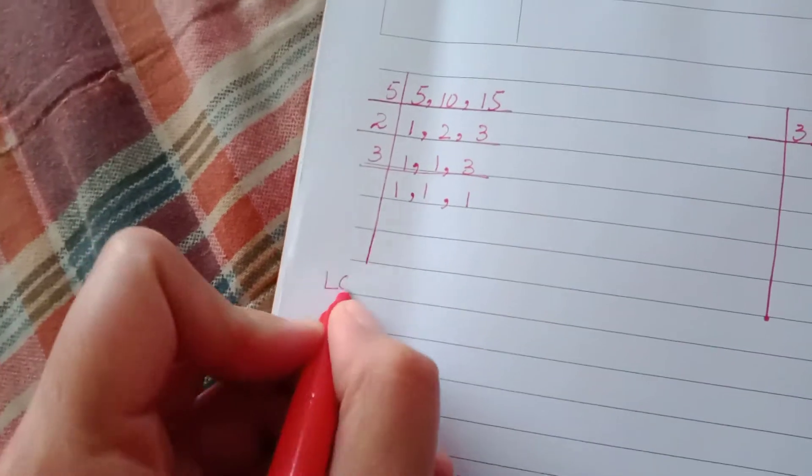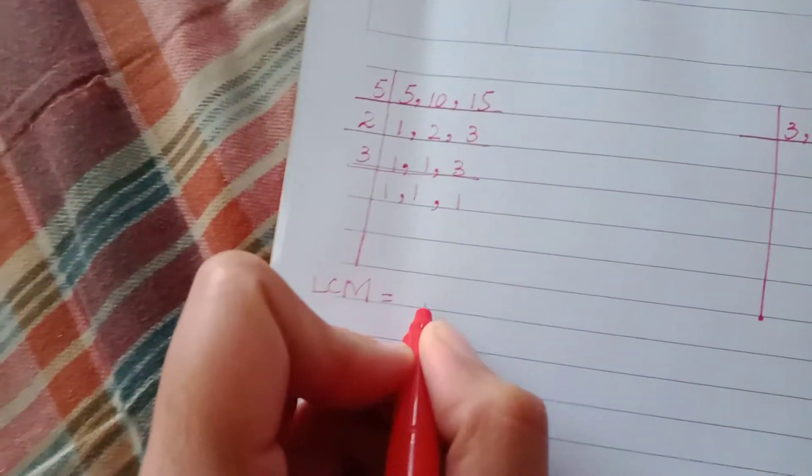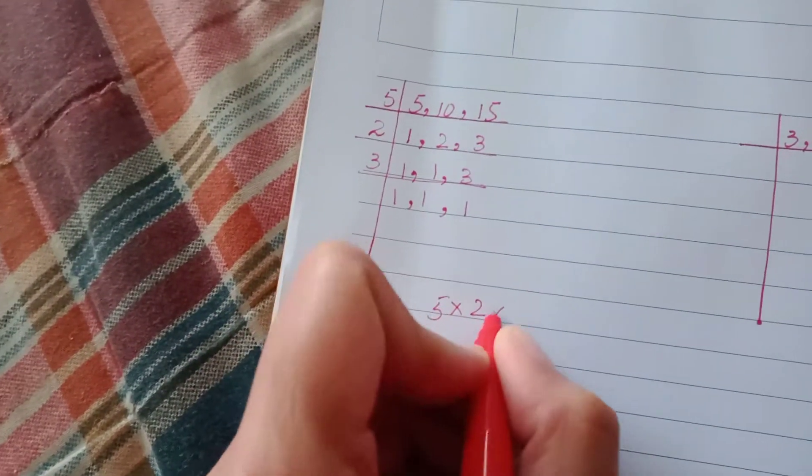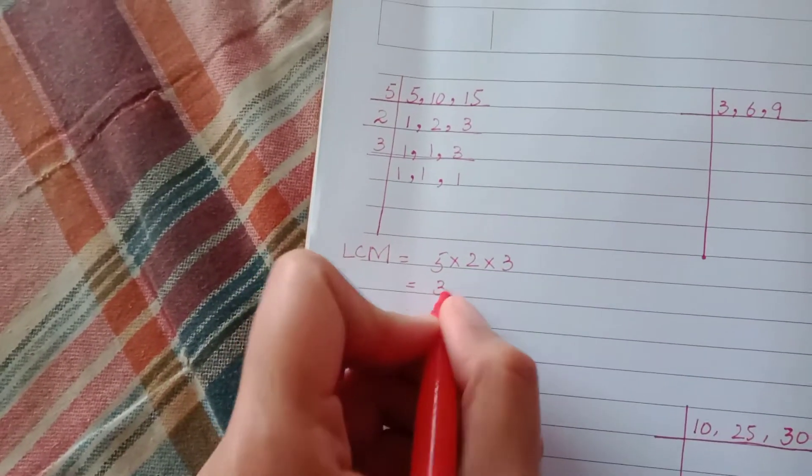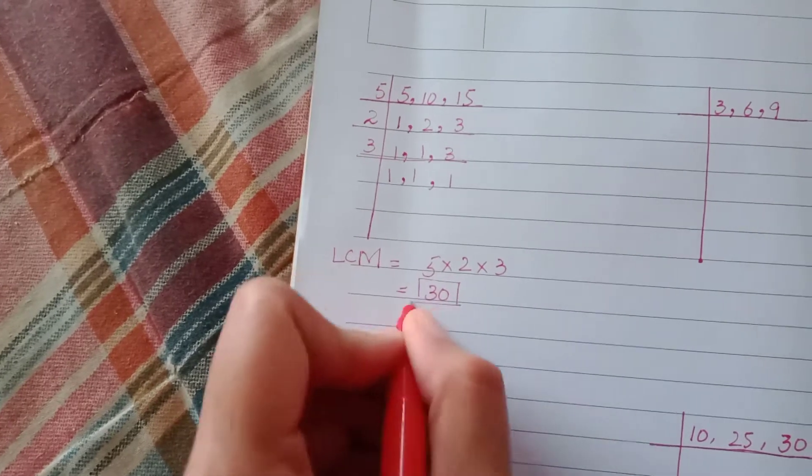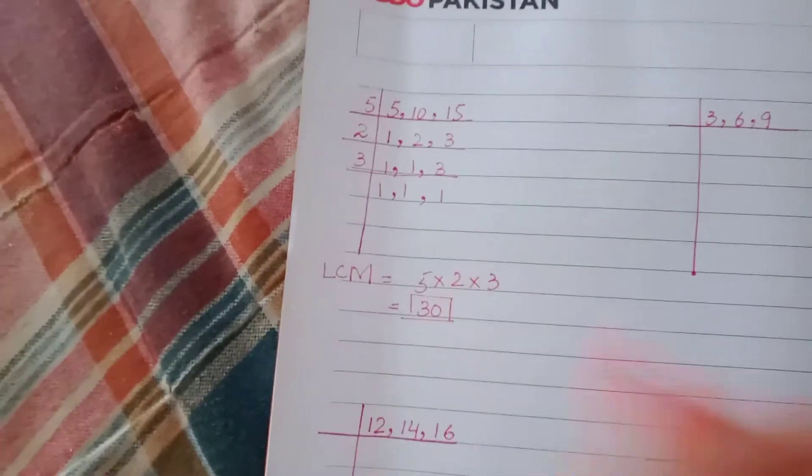Now you have to multiply all these numbers. LCM equals 5 multiplied by 2 multiplied by 3. Now 5 times 2 is 10, 10 times 3 is 30. So the answer will be 30.